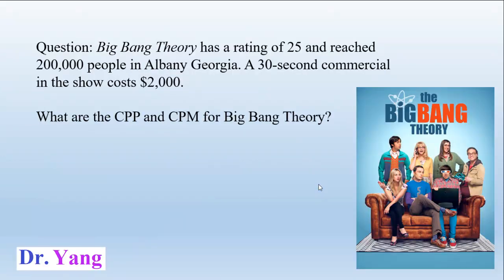Here is the question. Assume the popular TV show Big Bang series has a rating of 25, and it reached 200,000 people in Albany, Georgia. For this TV show, a 30-second commercial costs $2,000. So what are the CPP and CPM for Big Bang series?